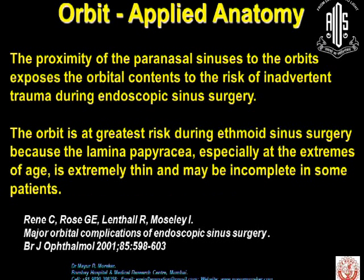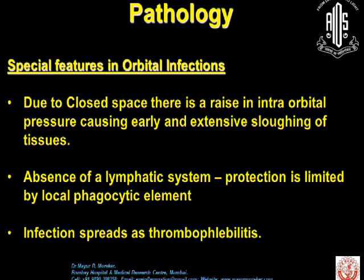A little bit of applied anatomy here: the proximity of the paranasal sinuses to the orbit exposes the orbital contents to the risk of inadvertent trauma during endoscopic sinus surgery. The orbit is at greatest risk during ethmoid sinus surgery, because the lamina papyracea, especially at the extremes of age, is extremely thin and may be incomplete. The special features in orbital infections are that, due to the closed space, there is a rise in intraorbital pressure causing early and extensive ischaemia of tissues. Absence of the lymphatic system means that protection is limited by local phagocytic elements, and infection often spreads as cellulitis.